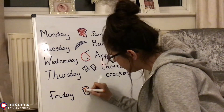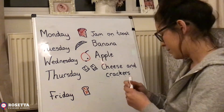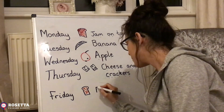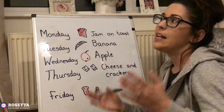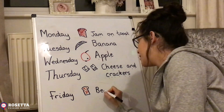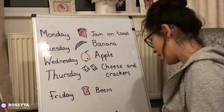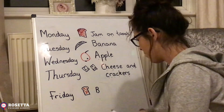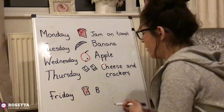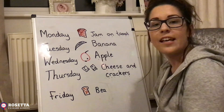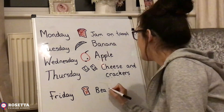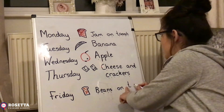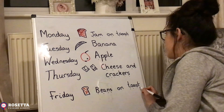Here's my beans on toast. Beans — the first sound is b. You can write b-e-n-s using your phonics, and that's fine. But we also have 'ea' which makes the same long 'e' sound — something you'd have learned at school by now. So: b-e-a-n-s, beans. Then 'on' — o-n. And toast — t-o-a-s-t, toast. Beans on toast!